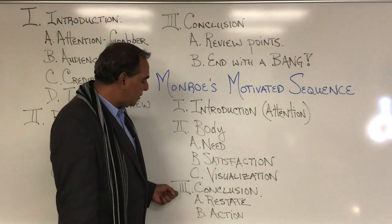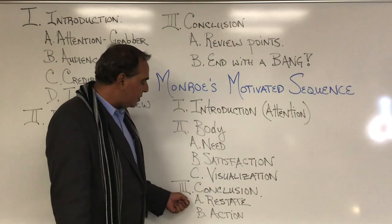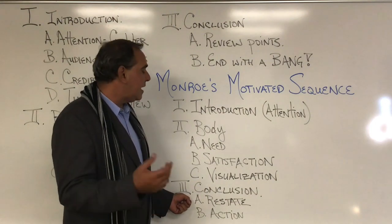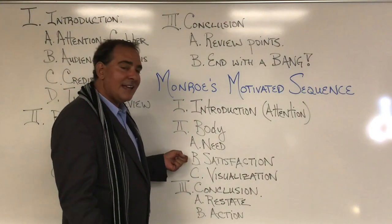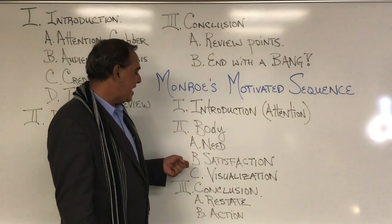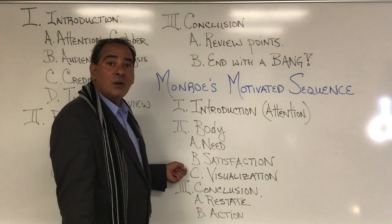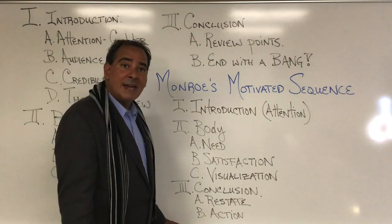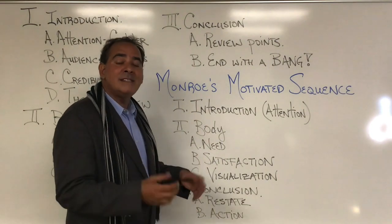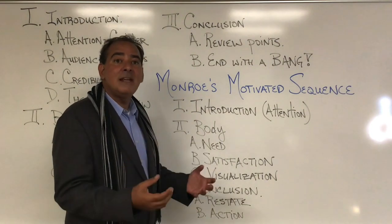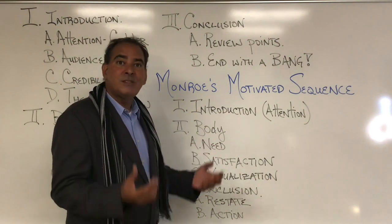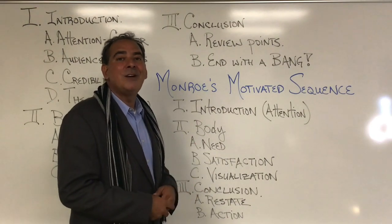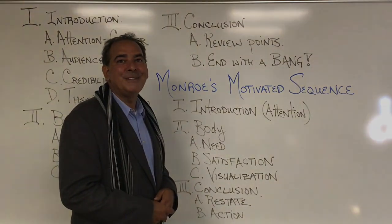Then you move to your conclusion, where your A sub-point is restating those main points — today we talked about the need, the satisfaction, and the visualization. And then, according to Monroe, the final step is calling us to action. You've primed the audience, and at the very end you give them personal, social, and political actions they can take to go out and make change in the world.